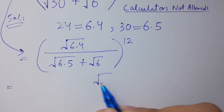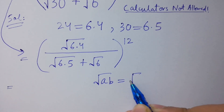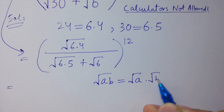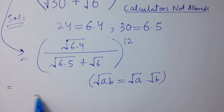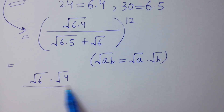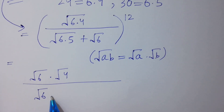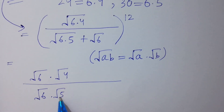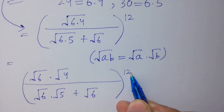Since square root of ab equals square root of a times square root of b, we have: square root of 6 times square root of 4, over square root of 6 times square root of 5 plus square root of 6, to the whole power 12.